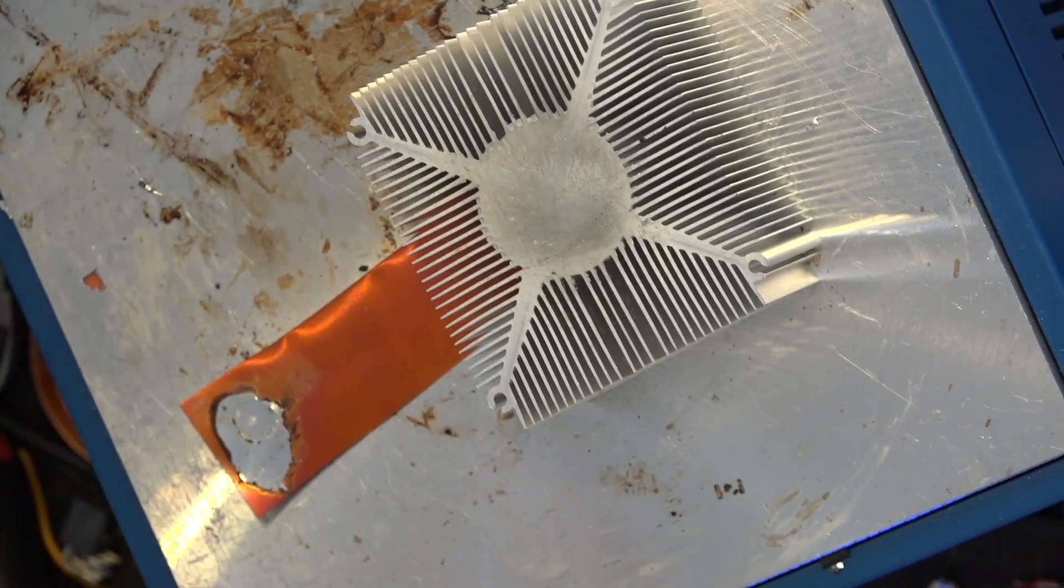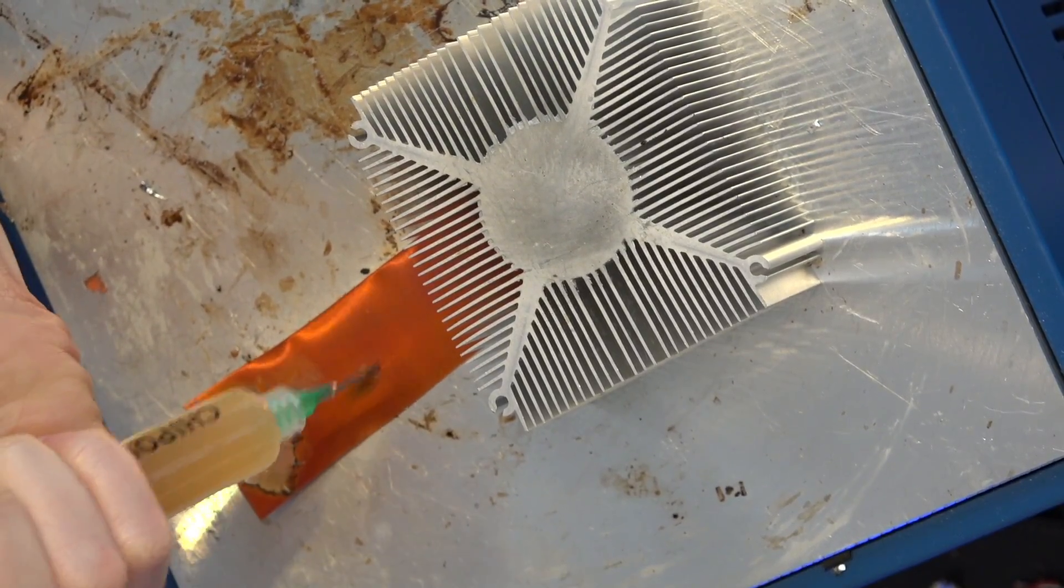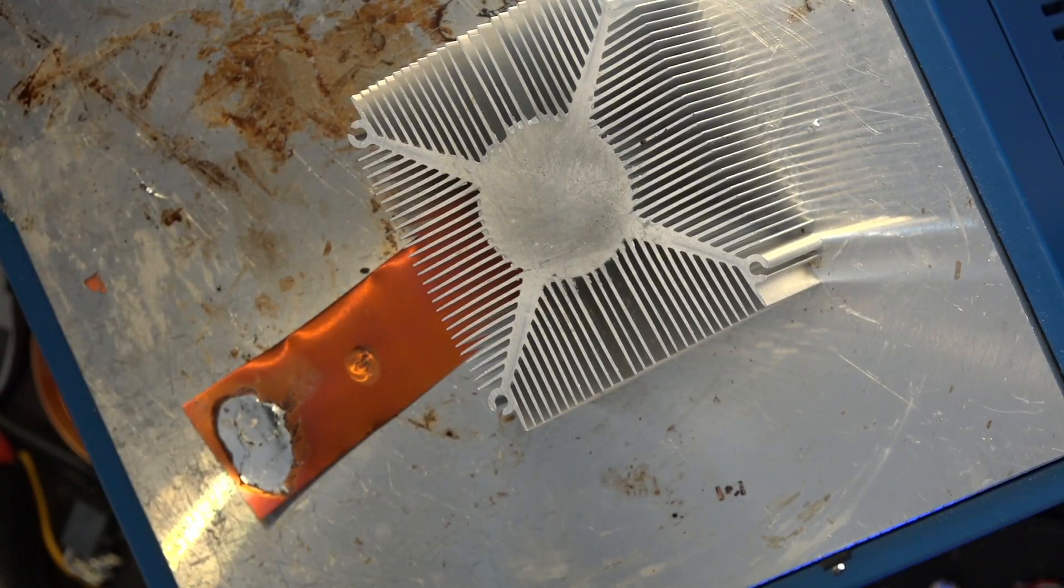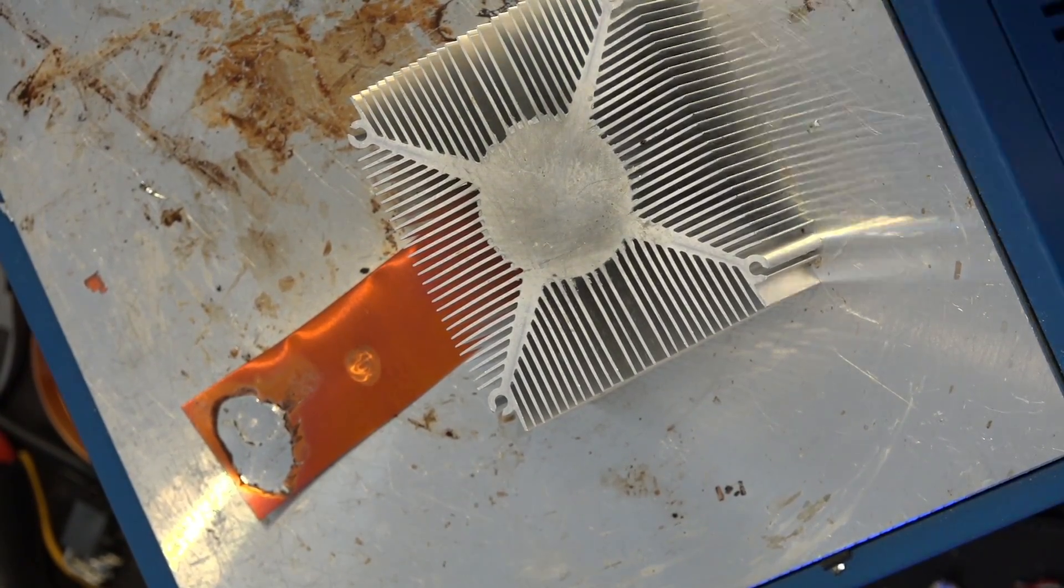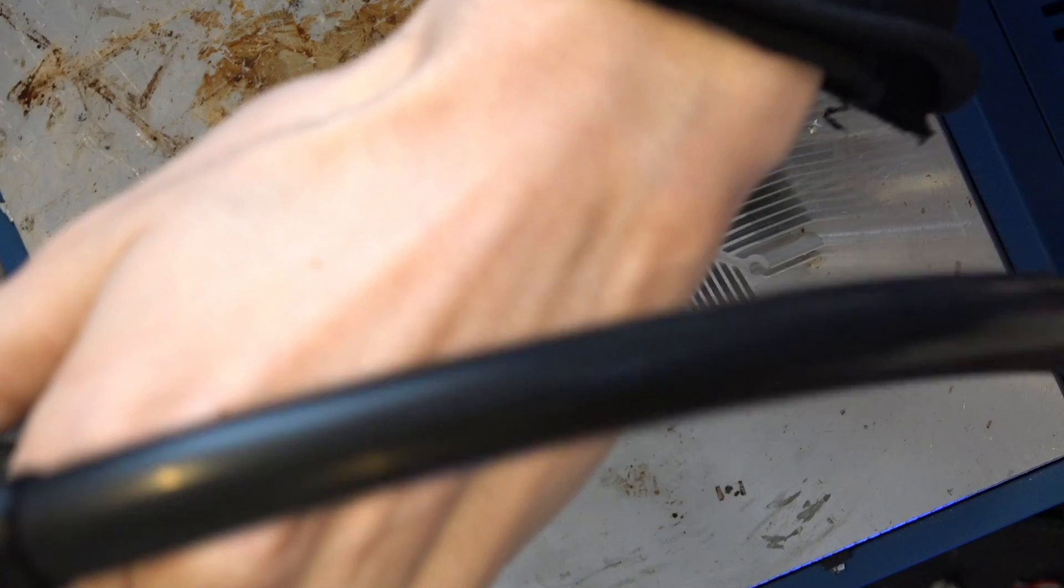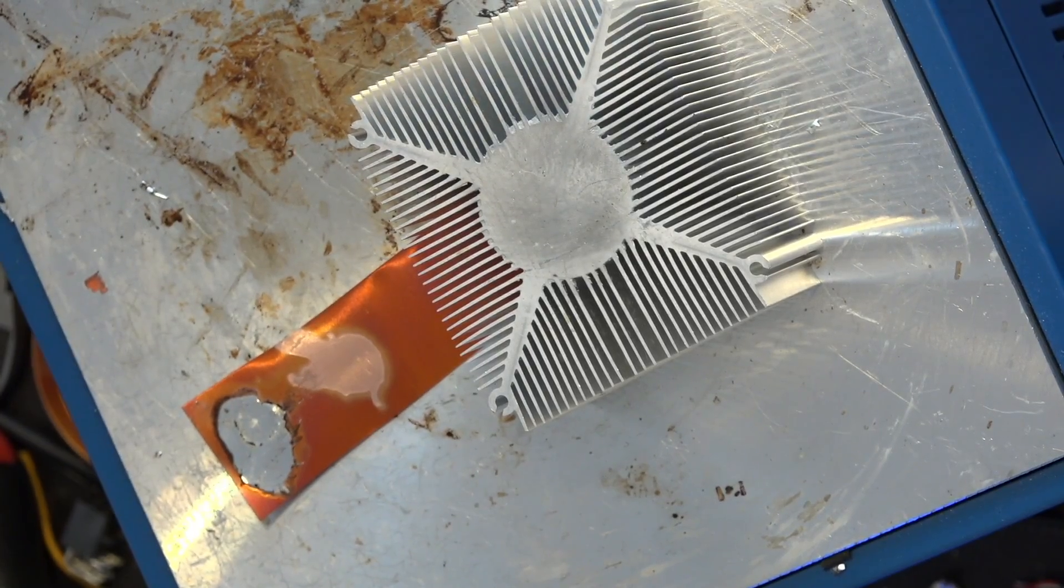And also I want to show you what it looks like if we don't actually add any tin to it, so you can actually see how the flux eats away the oxide layer. Just gonna put some flux over there. And we're gonna hit it with the hot air station a little bit. And you can see how the flux just eats away at the oxide, right?